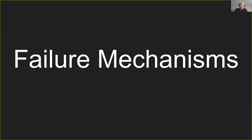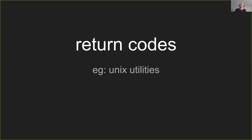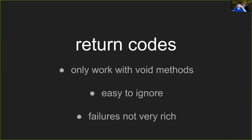Let's talk about failure mechanisms. One of the reasons why the failure handling code in my example was so bad - other than the fact that I artificially made it bad to make a point - is that different sorts of errors require different sorts of handling. We could use return codes, like Unix utilities, where they return zero on success and some other code if they fail. This is only useful if it's a void method. It's super easy to ignore, and the failures are not very rich - the number of times you've seen a Unix utility fail with error code 4 and had to go look it up.